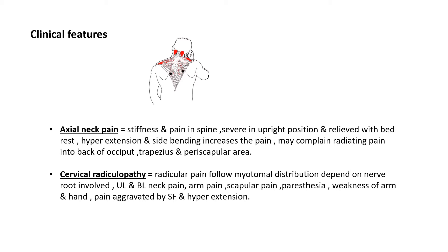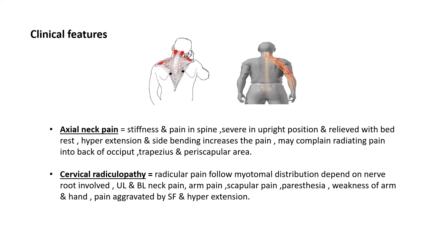In cervical radiculopathy, the pain may radiate to the unilateral or bilateral side. The patient complains of arm pain, scapular pain, paresthesia, and weakness of the arm and hand on the involved side. Pain is aggravated by side flexion and hyperextension of the cervical spine. There is an image showing radicular pain patterns from the cervical area down to the fingers.